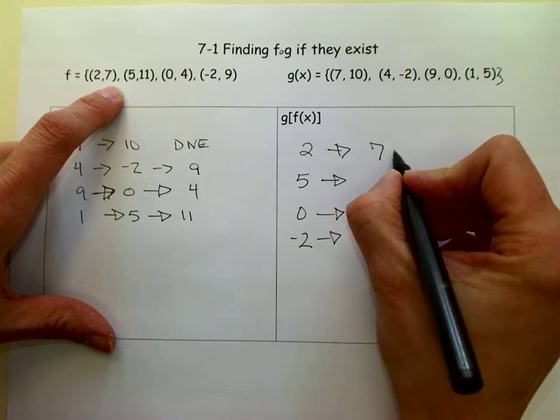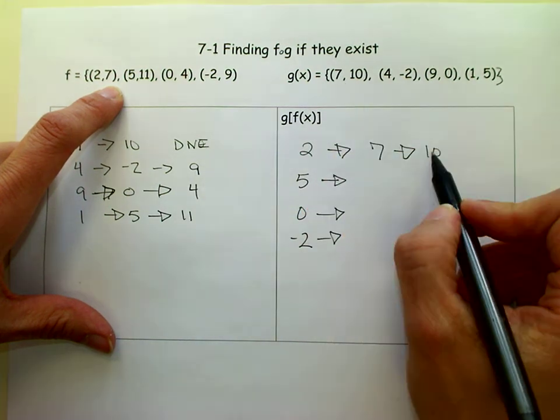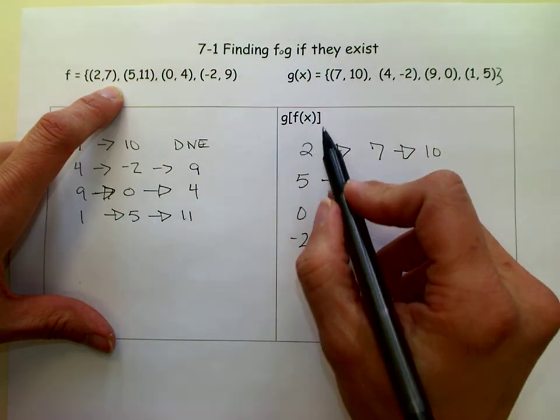Okay, so 2 yields us a 7, and 7 yields us a 10 over here. So we know that g of f of 2 is 10.